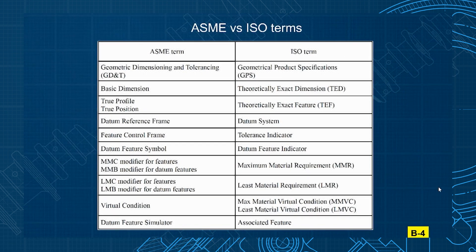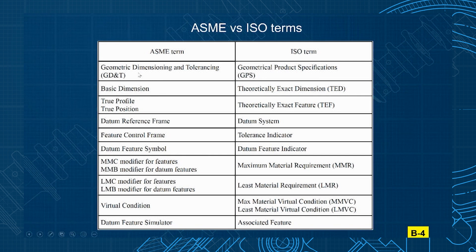Let's start with the whole concept of GD&T — that's what we call it in ASME, Geometric Dimensioning and Tolerancing. Now in ISO, they call it GPS, Geometrical Product Specifications. I will say, I think we do have a better name there, because GPS does get mixed up with the Global Positioning System. But GD&T versus GPS.